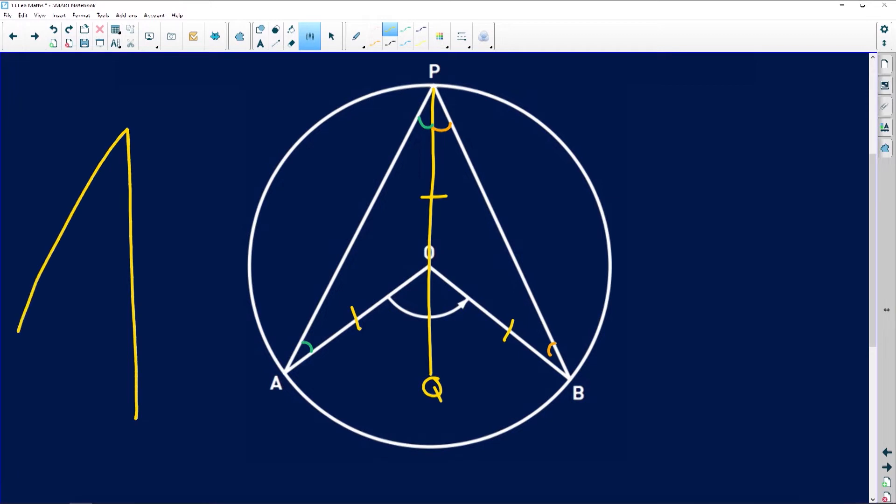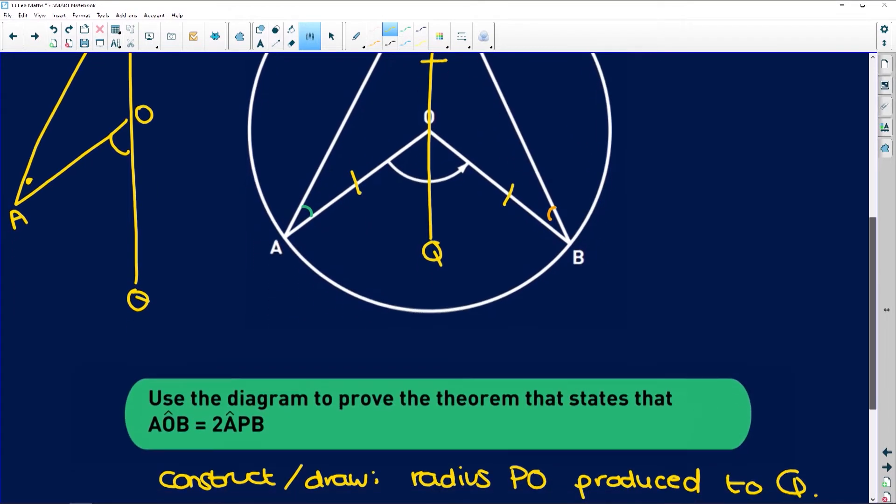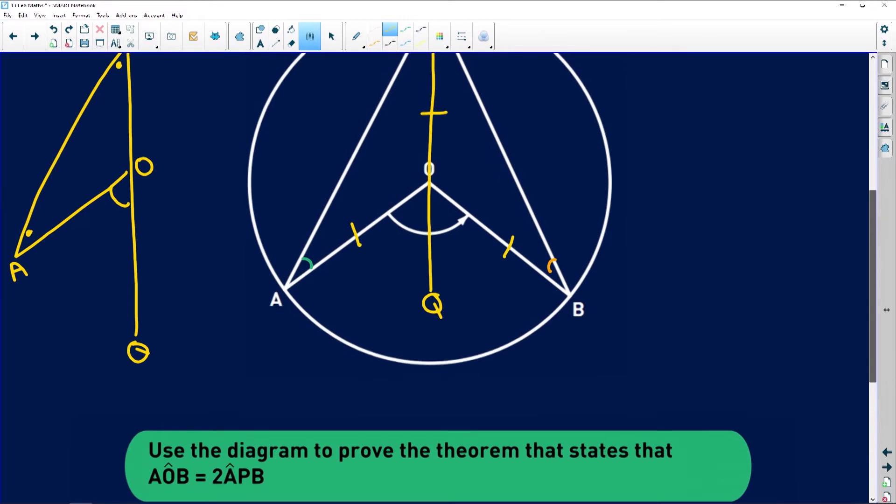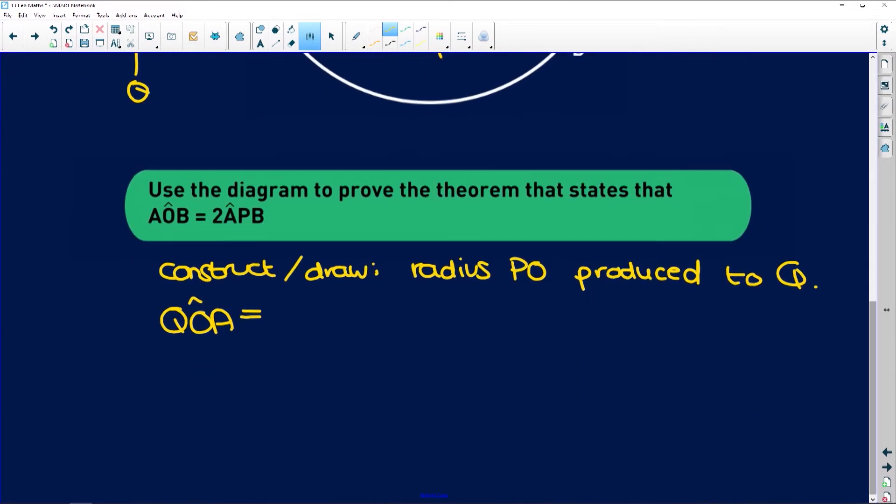On the left hand side, I have this angle QOA. And that is equal to the sum of these two angles. Why? Exterior angle of a triangle. So if I say QOA is equal to OAP plus APO. Why? Because exterior angle of a triangle.